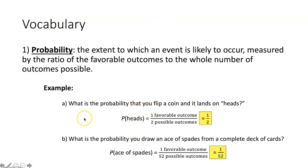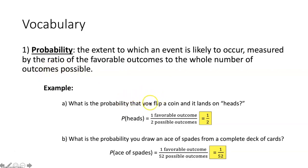We have two examples to show you what probability looks like. The first one says: what is the probability that you flip a coin and it lands on heads? Probability is the ratio of the favorable outcomes to the number of outcomes possible. How many outcomes are possible when you flip a coin? There are only two outcomes — heads or tails. So in our denominator, we're going to put two.